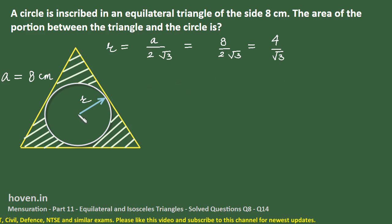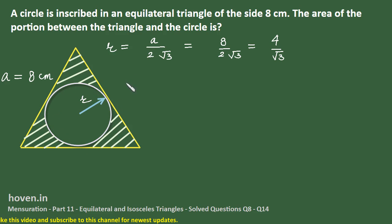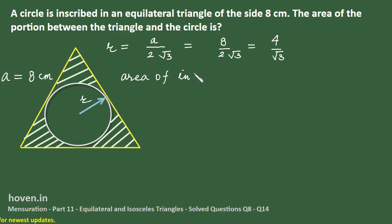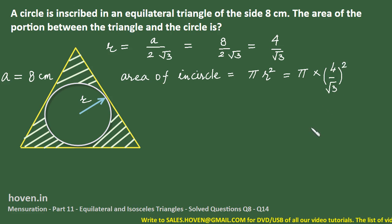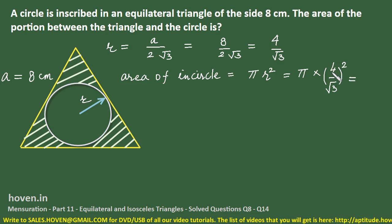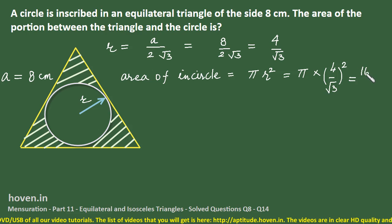With this radius, we can find the area contained inside the incircle. The area of the incircle is π r², which equals π × (4/√3)². This gives π × 16/3, which equals 16π/3 square centimeters.